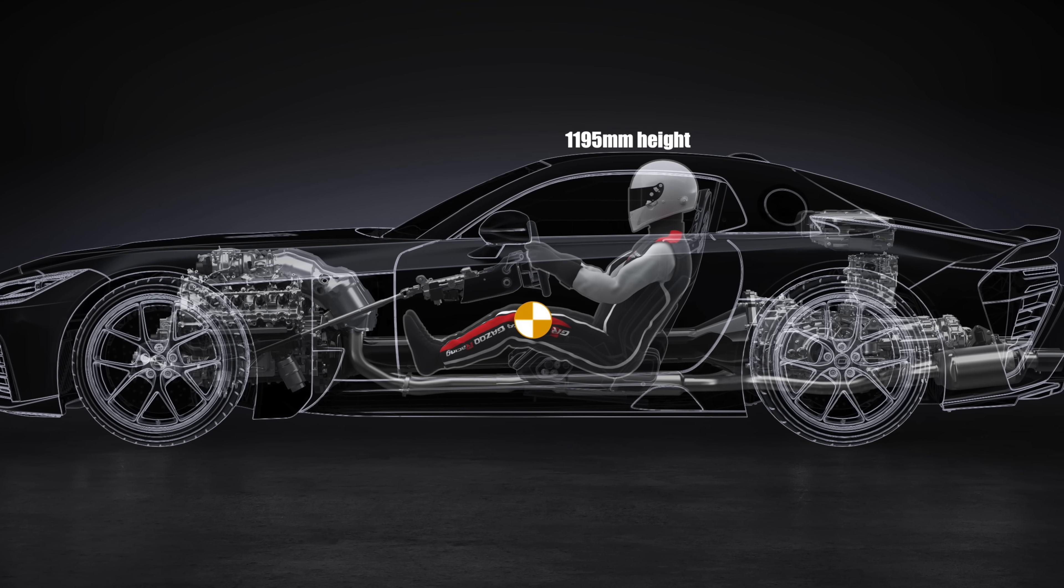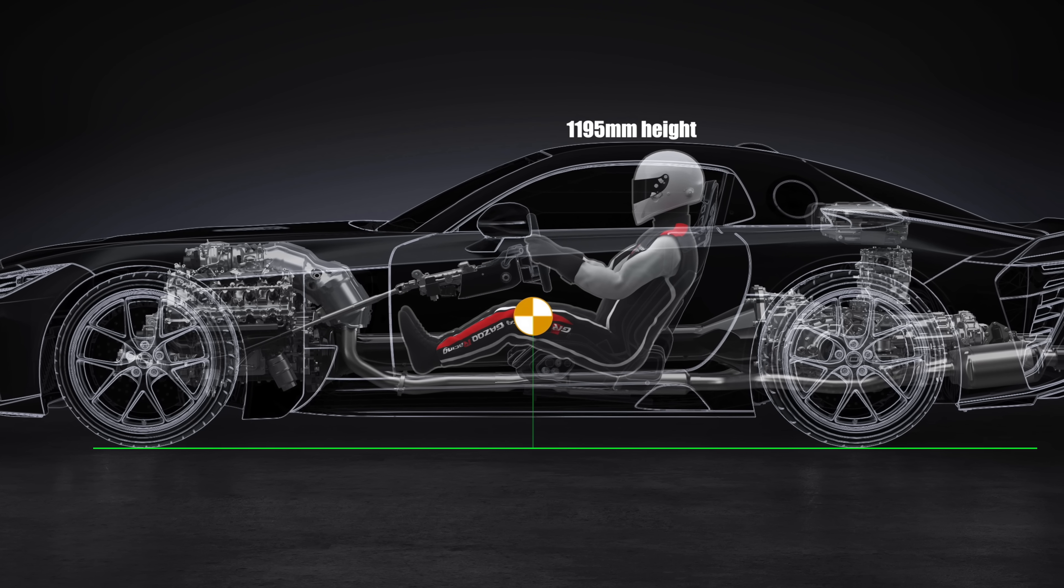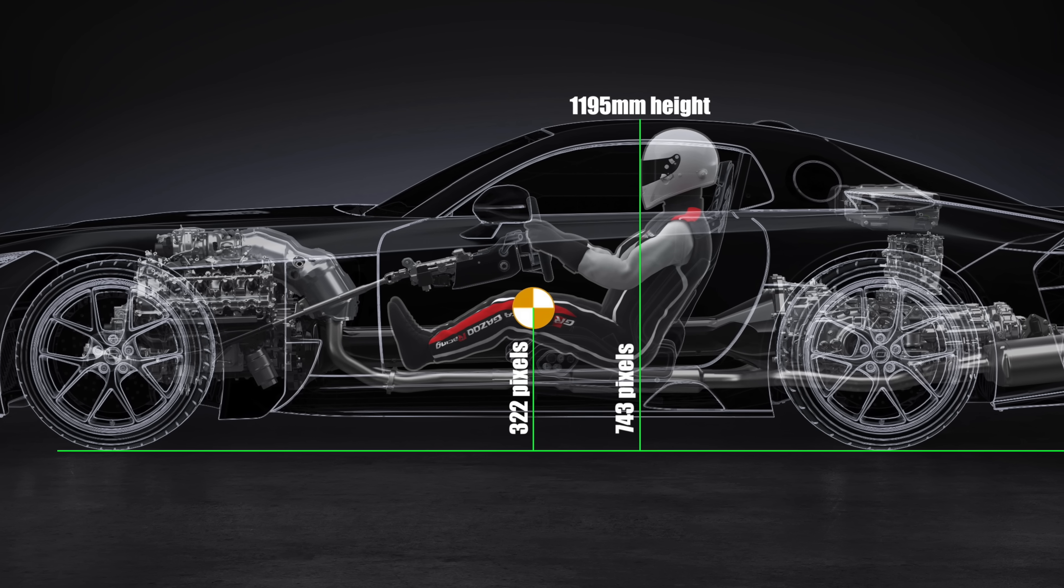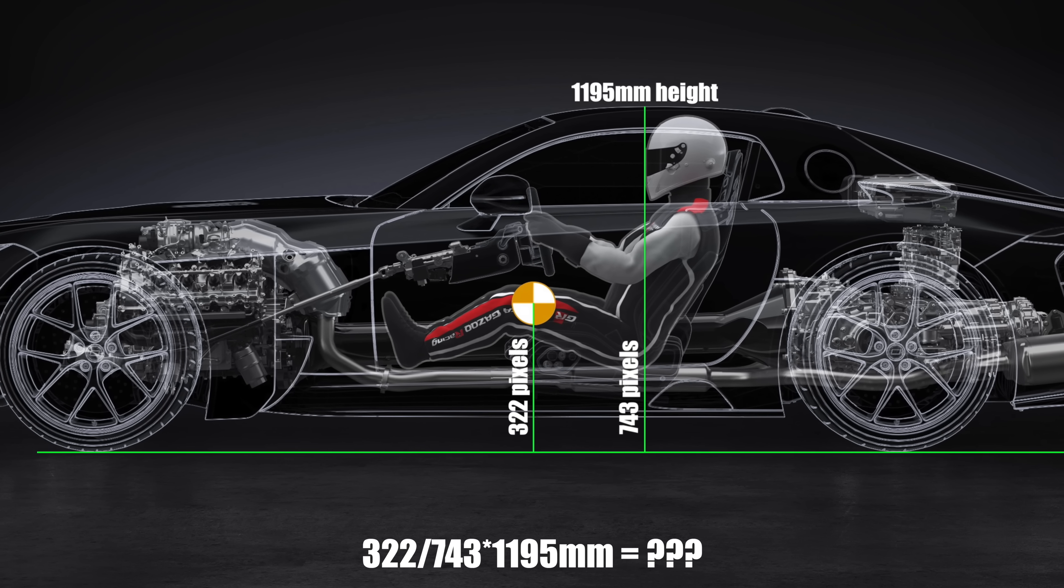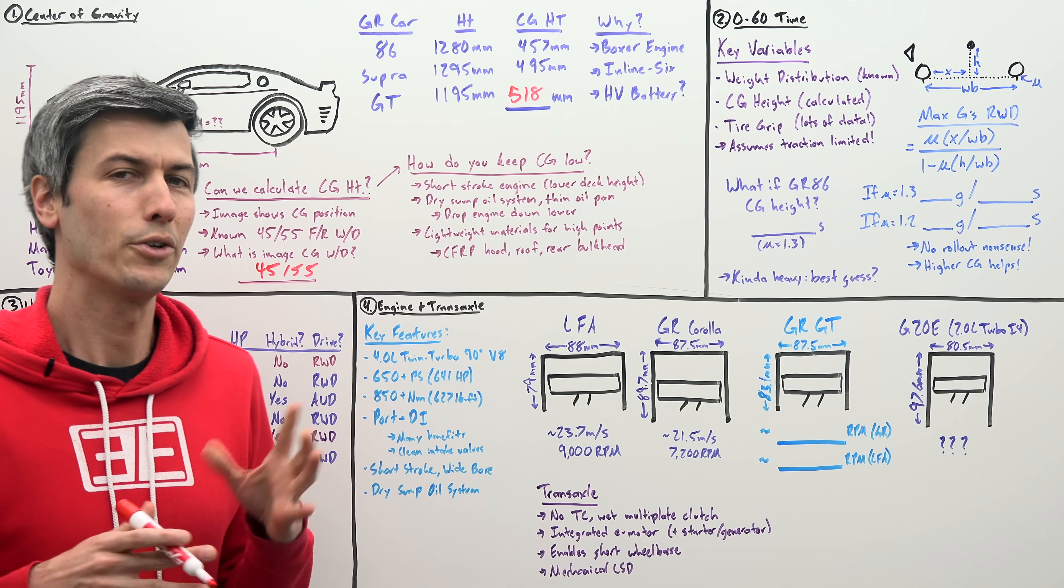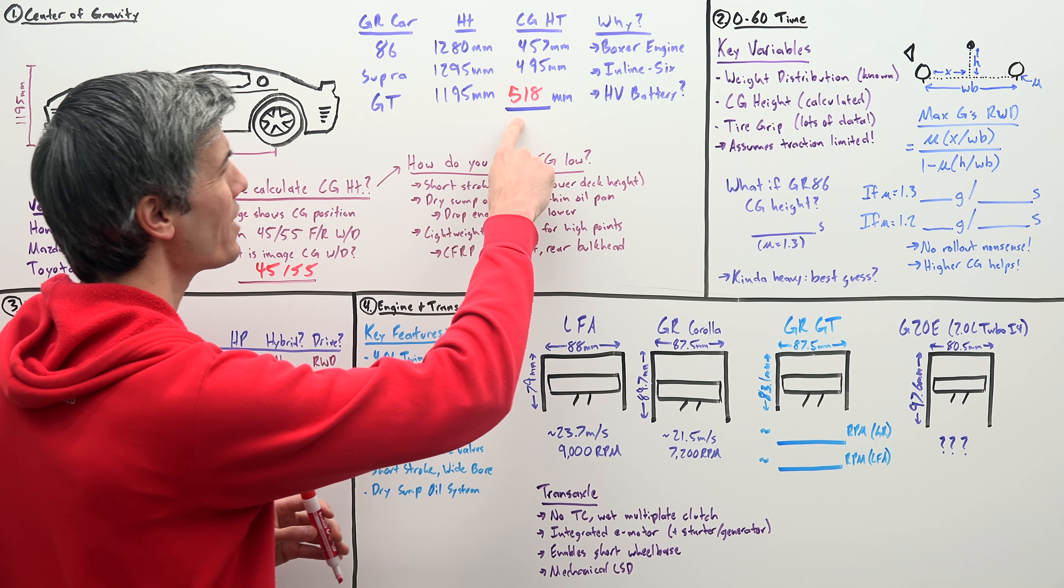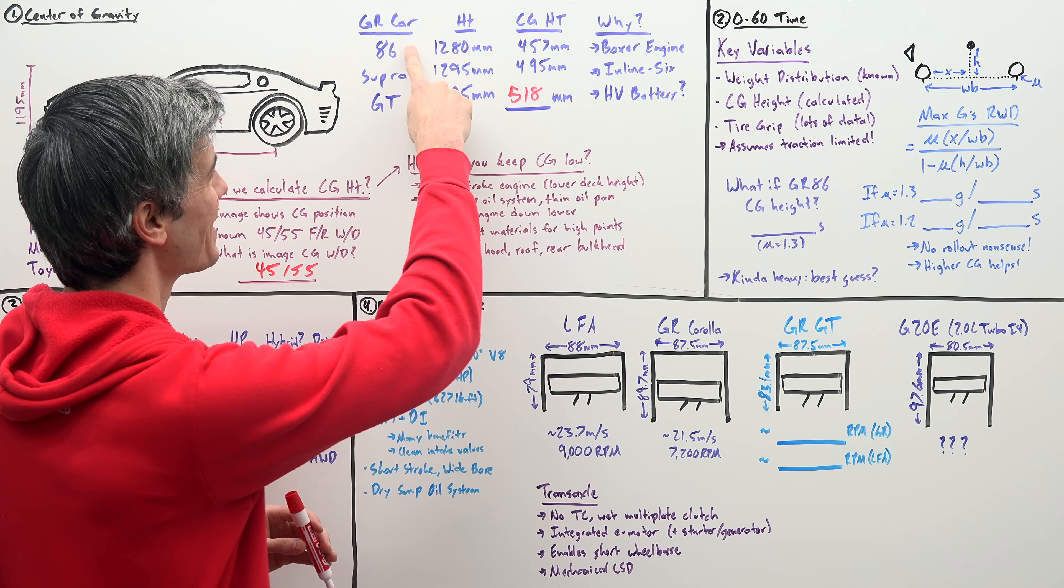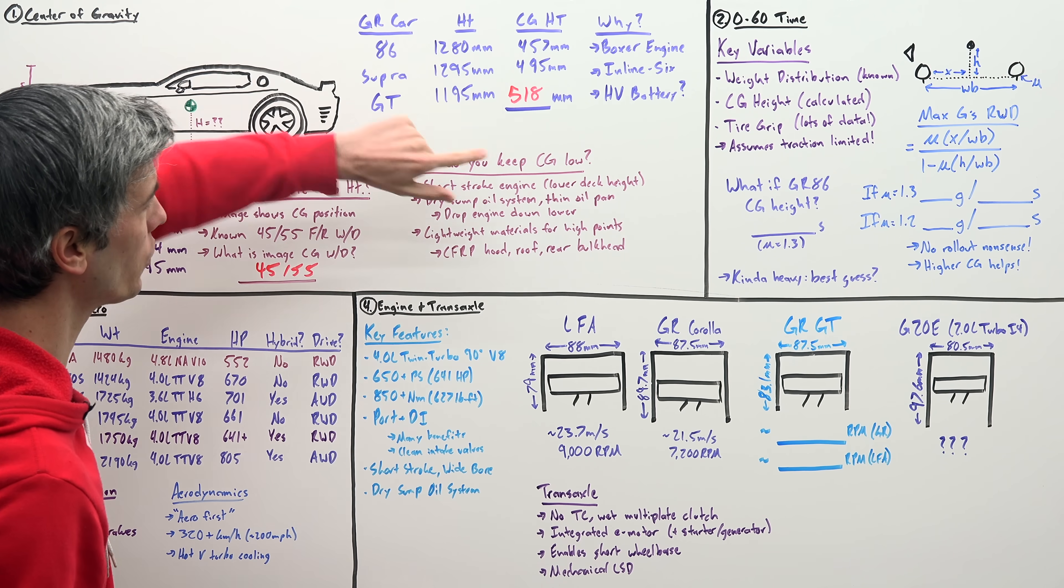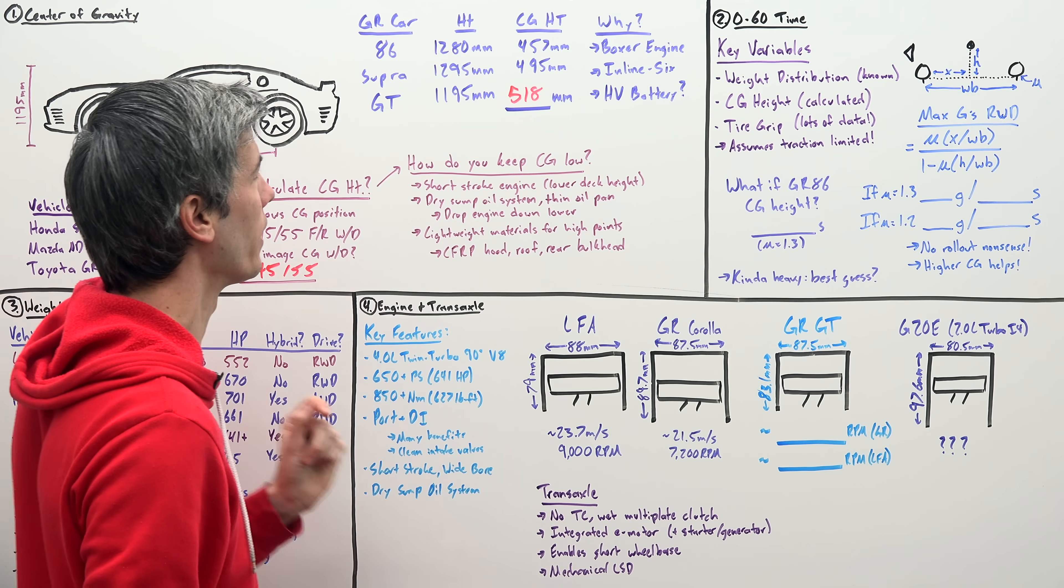If so, and because we know the vehicle's height, we can measure the distance from the ground to the CG versus from the ground to the top of the vehicle. And this gives us a center of gravity height of about 518 millimeters. Now you'll notice this is actually a higher center of gravity than both the GR86 and the GR Supra, which are both taller vehicles. So why might this be a higher center of gravity height?